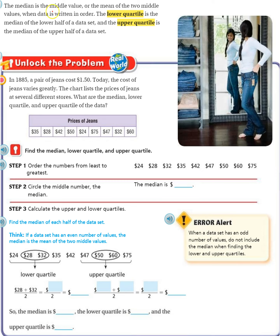The median is the middle value, or the mean of the two middle values, when data is written in order. The lower quartile is the median of the lower half of the data set, and the upper quartile is the median of the upper half of the data set.